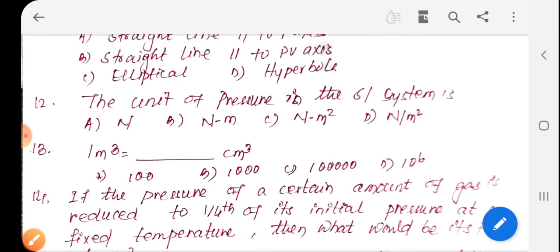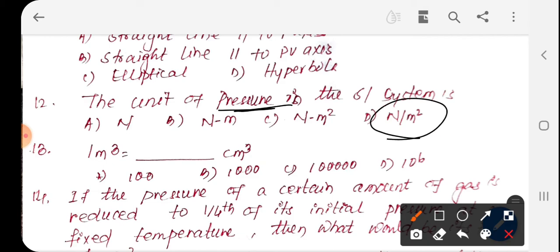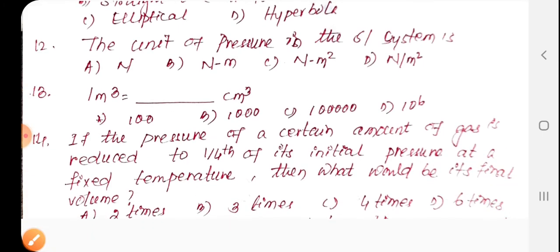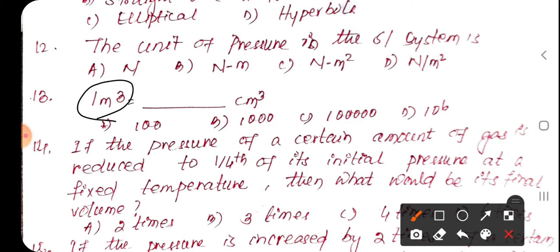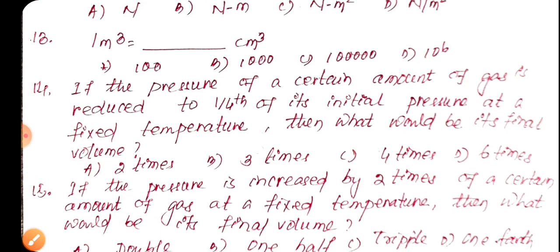Question about conversion: 1 cubic meter equals 100 centimeters cubed, which gives us the volume relationship. This is question number 14.